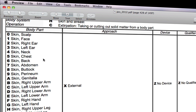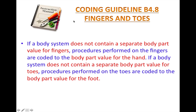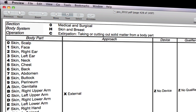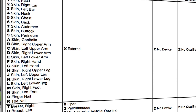That's the reason I'm going to introduce a new coding guideline — guideline B4.8, fingers and toes. You don't have to remember this number; I'll put it up there for your reference. If a body system does not contain a separate body part value for fingers, procedures performed on the fingers are coded to the body part value for the hand. Similarly, if a body system does not contain a separate body part value for toes, procedures performed on the toes are coded to the body part value for the foot. Basically, if there is no value for the thumb, then we can use the value for the hand — in this case, the left hand.